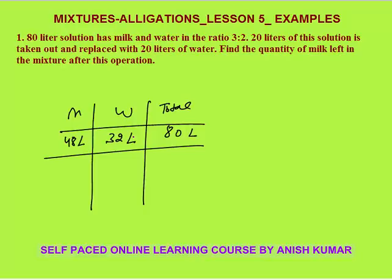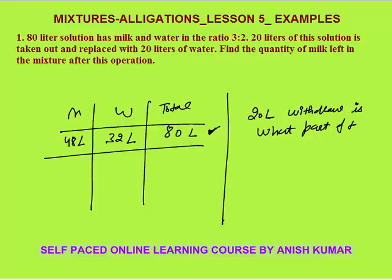The question says that 20 liters of this solution is taken out and replaced with 20 liters of water. Find the quantity of milk left in the mixture. Very important concept: 20 liters is what part of total? 20 by 80 is one-fourth of total. We have withdrawn one-fourth of the total solution.